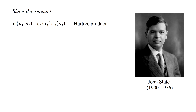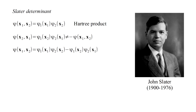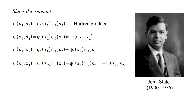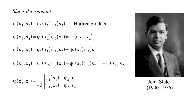In Hartree's method, we represent the wave function of a two-electron system by a product of two one-electron wave functions — a so-called Hartree product. Slater pointed out that this form of wave function is not intrinsically anti-symmetric, hence it does not rigorously satisfy the exclusion principle. But we can make it anti-symmetric by subtracting the product with the coordinates exchanged. This two-electron wave function is equivalent to the determinant of a matrix in which the columns correspond to different one-electron wave functions and the rows correspond to different electron coordinates. A normalizing factor — in this case one over the square root of two — is usually included.